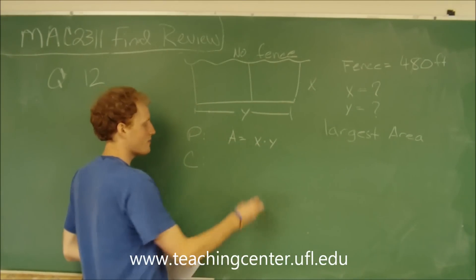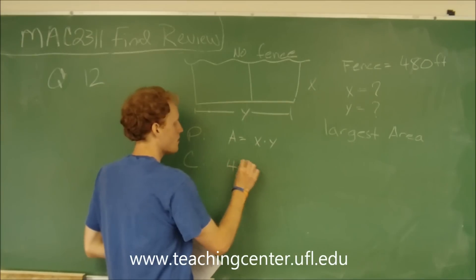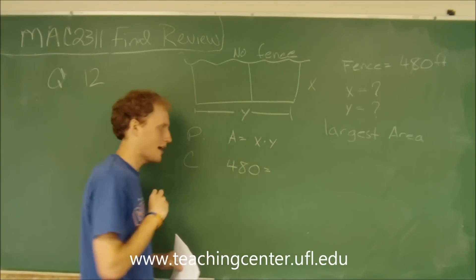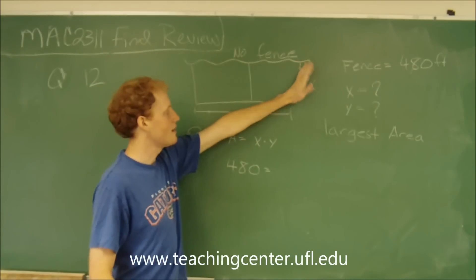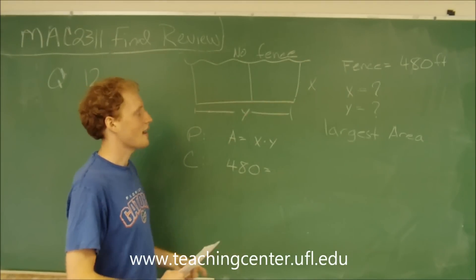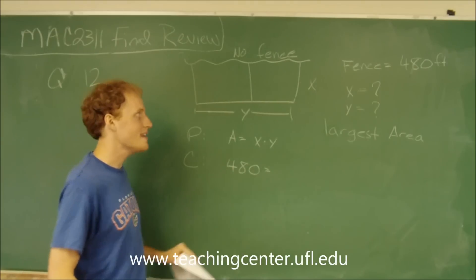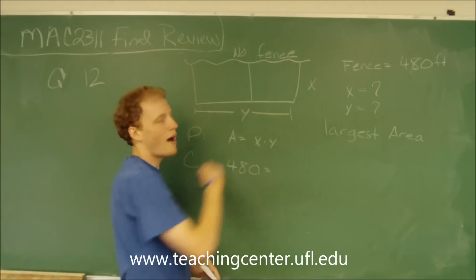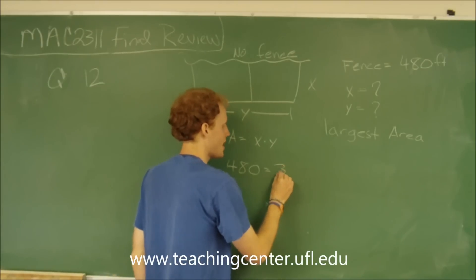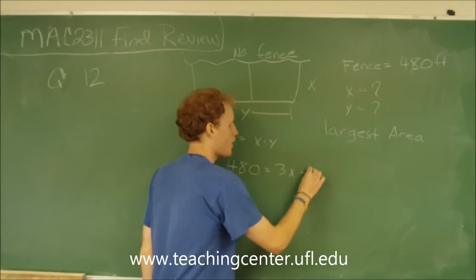So that means the amount of fence has to equal 480. Since we have fence here, here, here, and then on this side, the amount of fencing we need is x plus x plus x plus y, or in other words, 3x plus y.